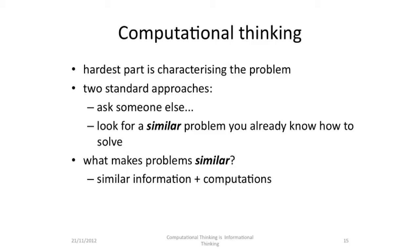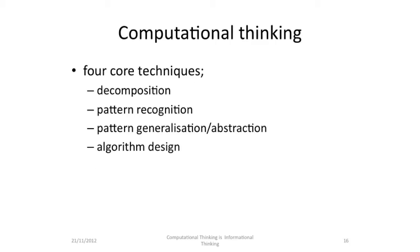There are two standard approaches. The easiest, of course, is to ask somebody else — that's really a bit of a cheat. The harder way is to look for a similar problem that you already know how to solve. What makes problems similar? They're going to be similar if they've got similar information and similar computations. In computational thinking, there are four techniques: decomposition, pattern recognition, pattern generalisation and abstraction, and algorithm design.